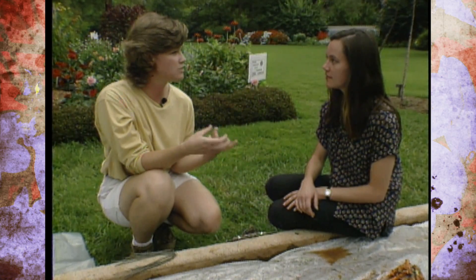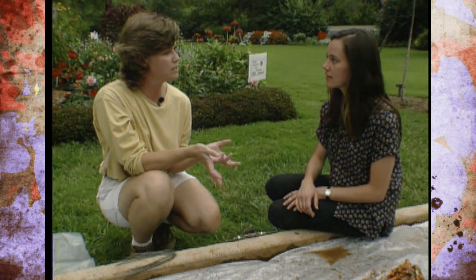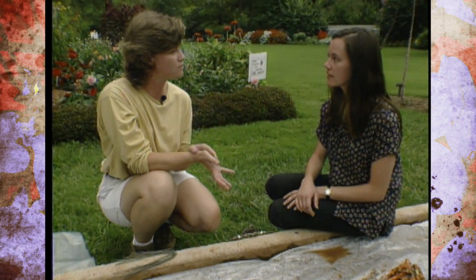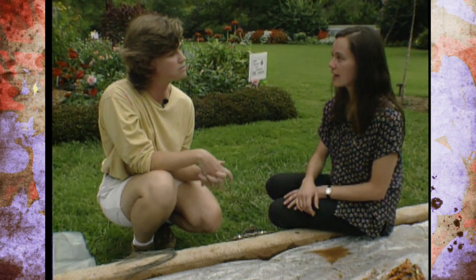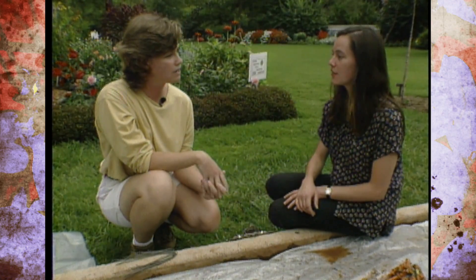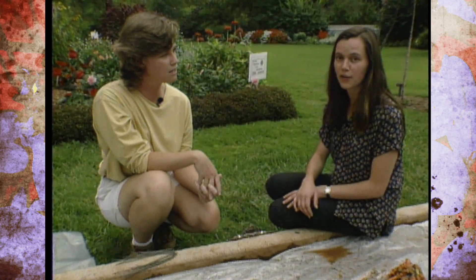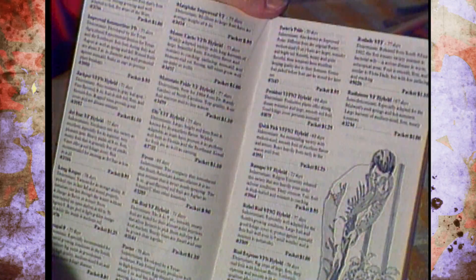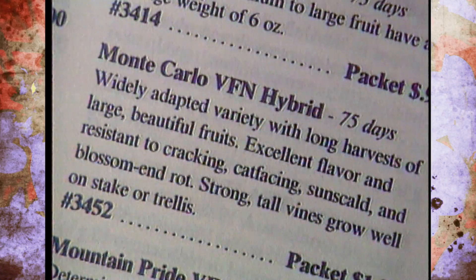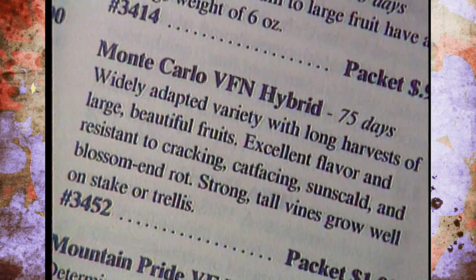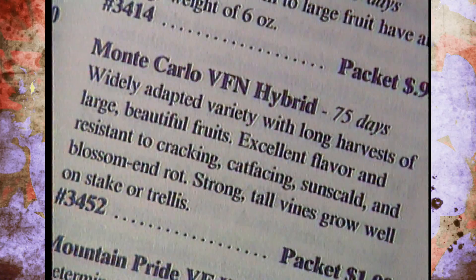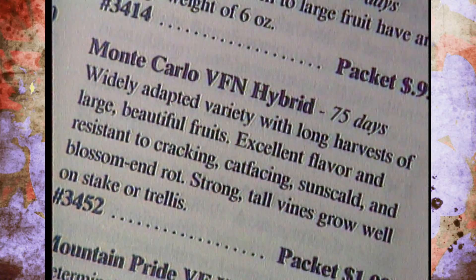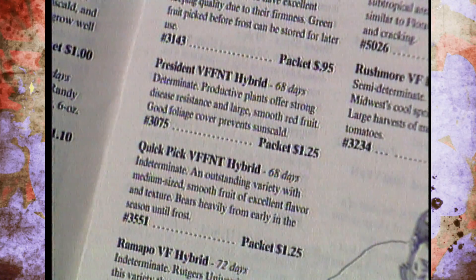Some of the vegetables you can put in — there are some resistant varieties that you can plant that are resistant to nematodes. The way to find out whether a variety you're interested in is resistant is to look at the packages. If it has an N on it, that will indicate some resistance to the southern root knot nematode.